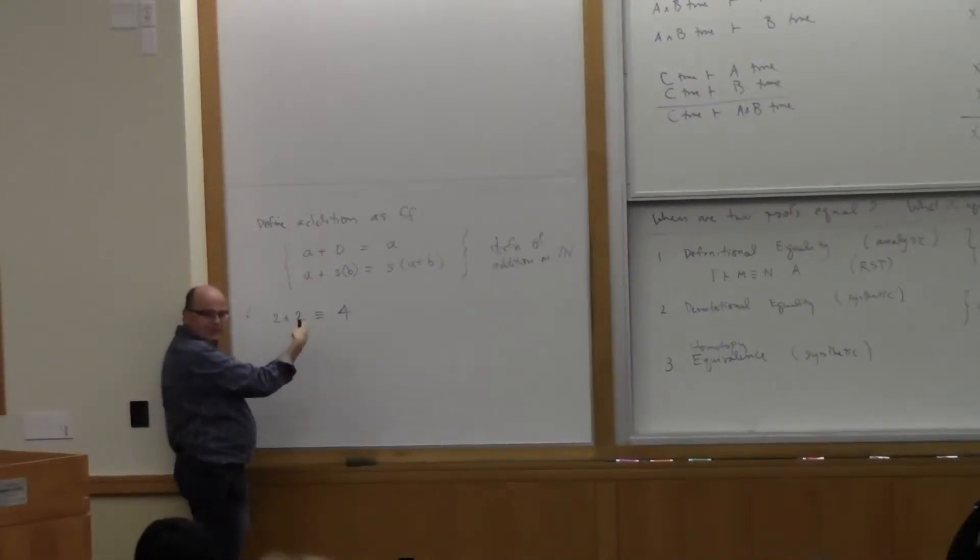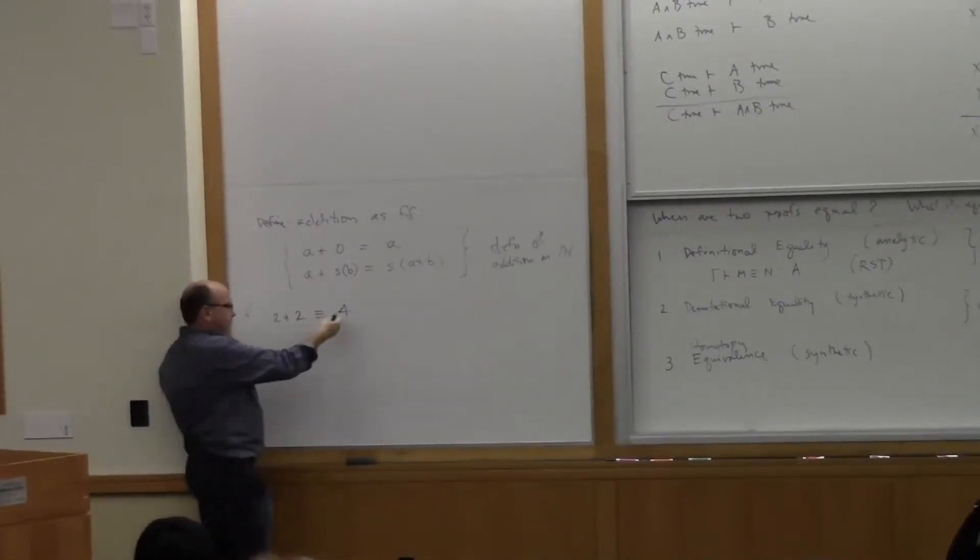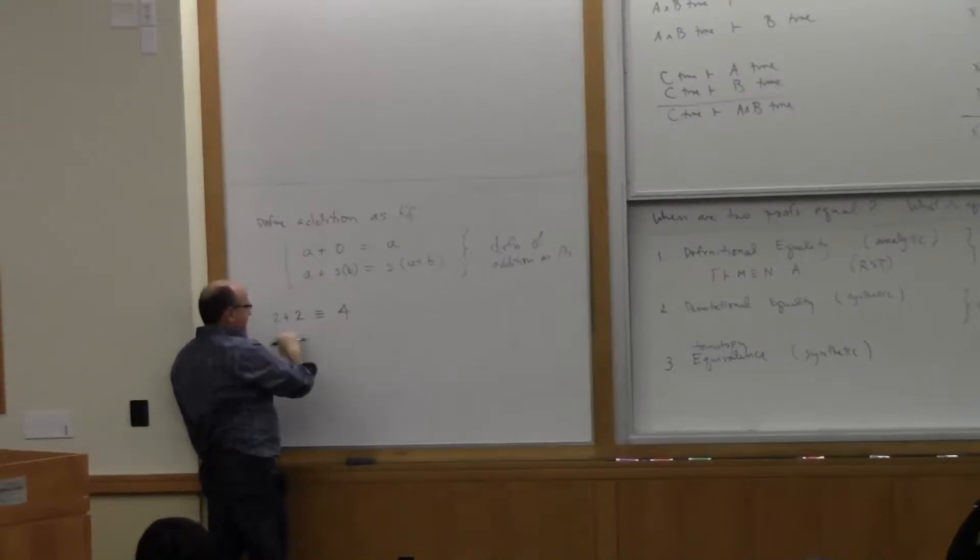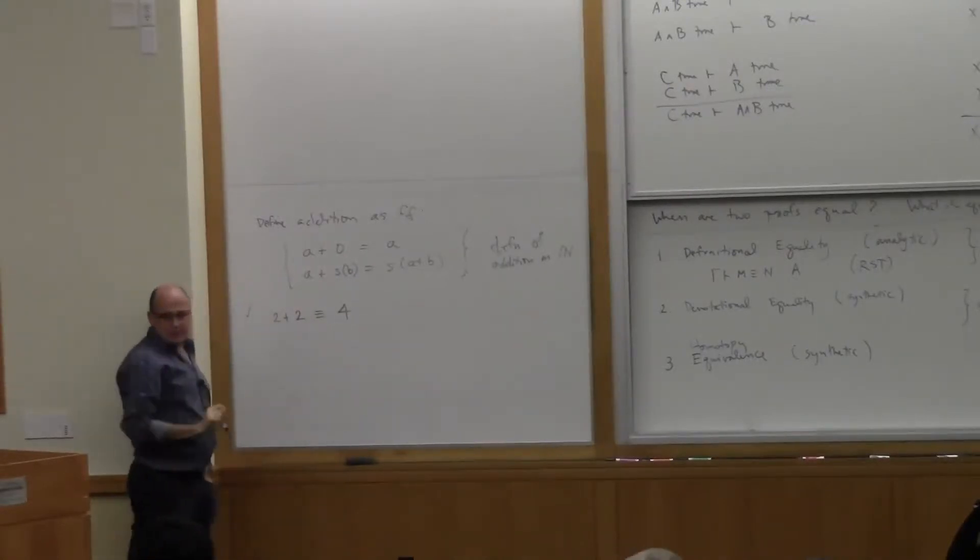Well, because 2 means a successor, a successor of 0, right? This is the 4 times. Because if you apply these equations, and we treat those as definitional equivalence, as I stated, then you'll get this as a correct definitional equivalence. That's no problem at all.